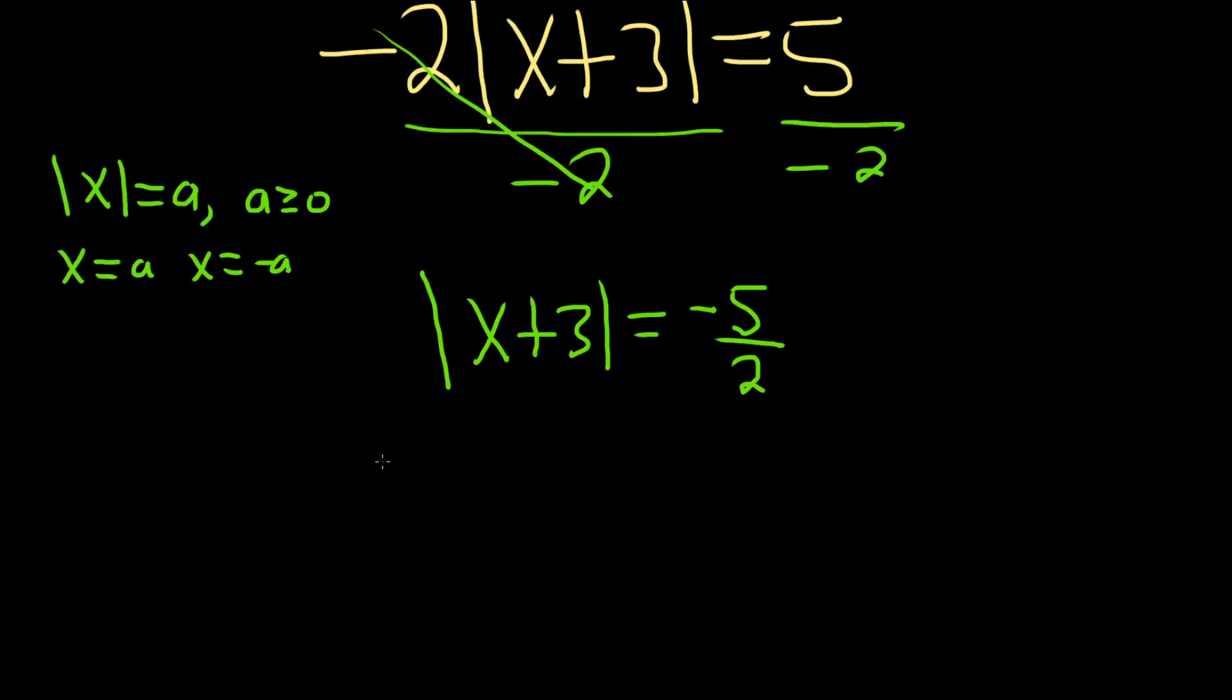So what does this mean? Well, if you think about it, the absolute value of something is the distance between that something and 0. So we're saying the distance between this number, x plus 3, and 0 is negative. Well, distance can't be negative.